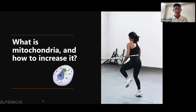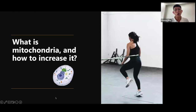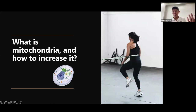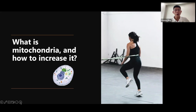Mitochondria are small pill-shaped organelles inside muscle cells. They break down fat molecules and produce the energy needed for the body. Since fats have a lot of energy — almost limitless and very hard to finish — compared to carbohydrates stored in muscles and liver which are easier to use but limited in supply, if you have more mitochondria that means you have more energy available. So more mitochondria helps your body use fats as a fuel source more effectively.